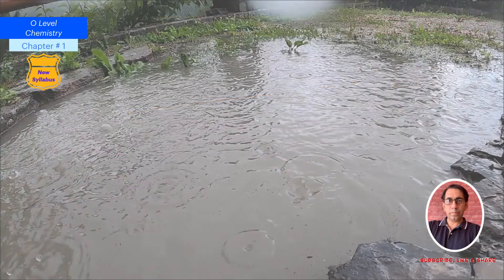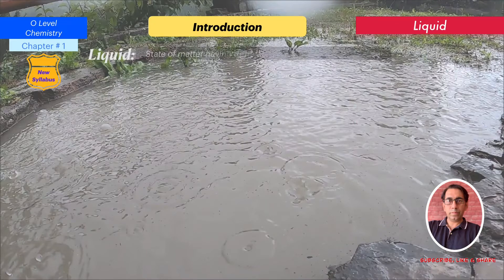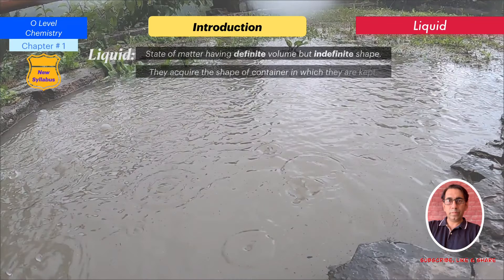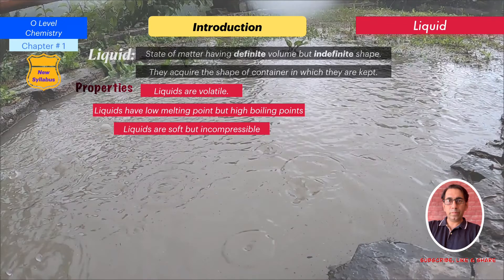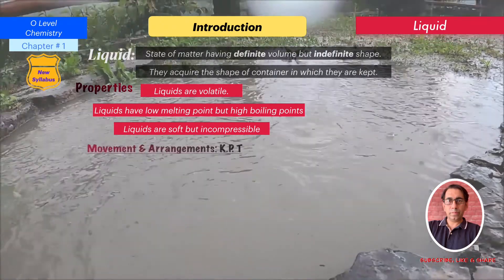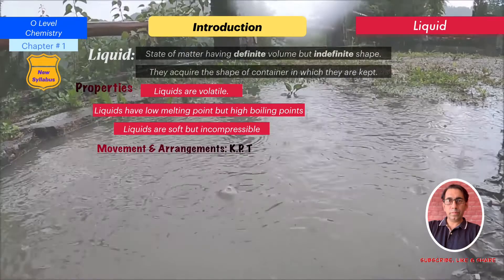Now, liquids. A liquid is a state of matter having definite volume but indefinite shape. Liquids acquire the shape of the container in which they are kept. We can change the shape of a liquid sample but cannot significantly change its volume. General properties: liquids are volatile. Liquids have low melting points but relatively high boiling points, though not higher than solids. Liquids are soft but incompressible.